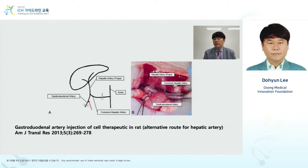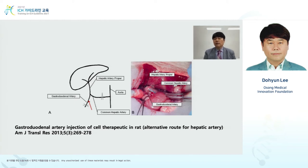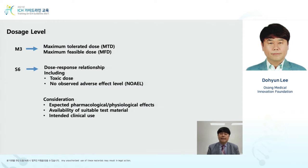If there are limitations due to the route of administration or to the size and physiology of the animal species, there could be differences. In one example, the route of administration differs — it must be the hepatic artery, but due to size, gastro-duodenal artery administration is used as an alternative. Given the flow of blood, there are no big differences, so gastro-duodenal artery was selected. This is an example of acknowledging the difference in route of administration.